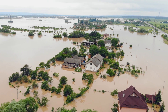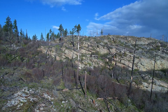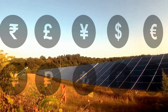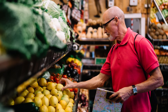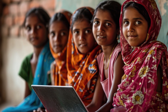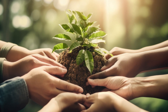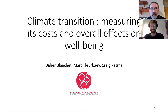The climate transition is anticipated to mitigate long-term welfare losses that would occur without intervention. However, short- and medium-term monetary costs are expected to arise during the transition. Marc Florbet and Craig Penn question GDP — is it the best indicator to correctly capture the monetary effects? And how can the non-monetary aspects of the transition be measured? My name is Marc Florbet and I'm with Craig Penn, and we'll talk about the climate transition: measuring its costs and overall effects on well-being. This has been prepared also with the help of Didier Blanchet.